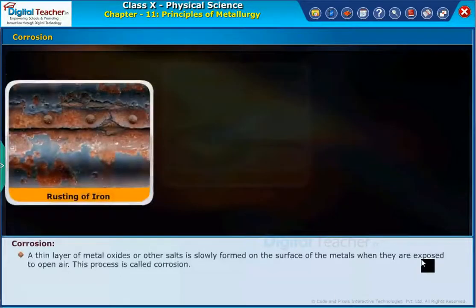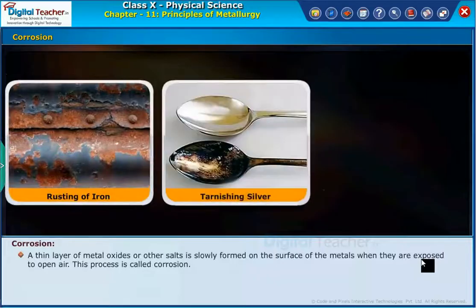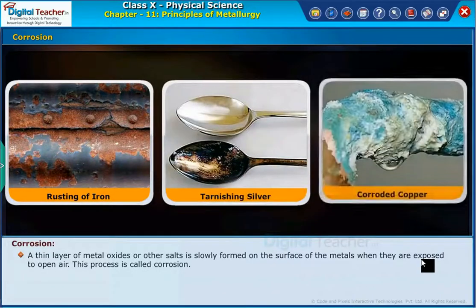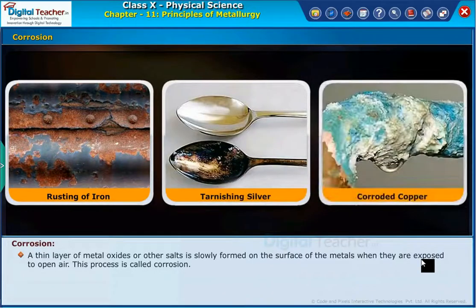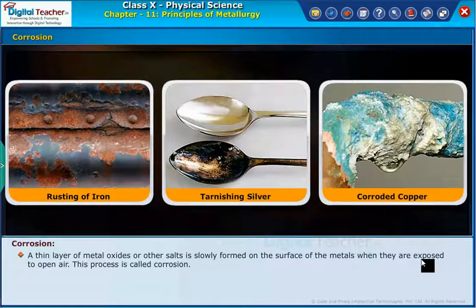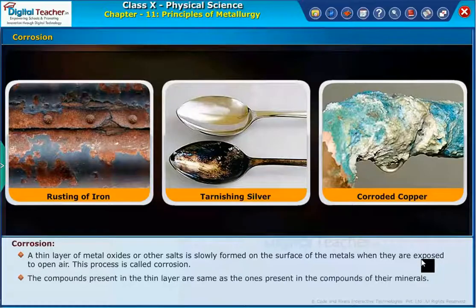Corrosion: a thin layer of metal oxides or other salts is slowly formed on the surface of metals when they are exposed to open air. This process is called corrosion. The compounds present in the thin layer are the same as the ones present in the compounds of their minerals.